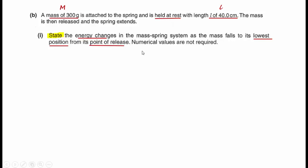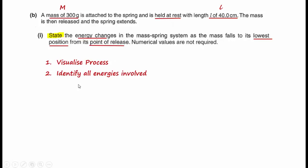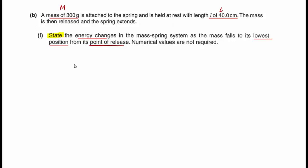To answer this type of question, first visualize the process, then identify all the energies involved at each stage. Initially, the mass is released from rest at a length of 40 cm. As the spring extends, speed increases and the tension in the spring starts to increase, up to the point where tension equals mg, which is the point of maximum speed.